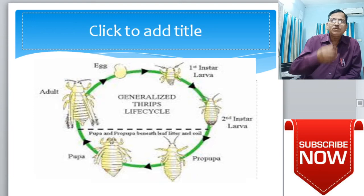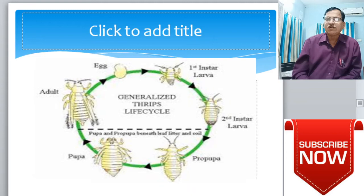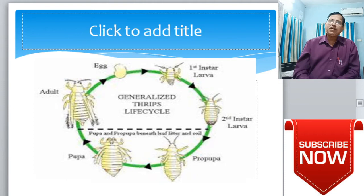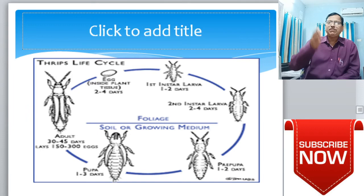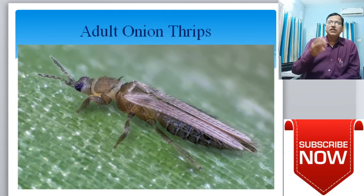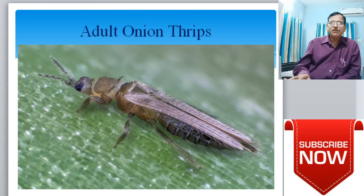The schematic life cycle diagram shows: eggs hatch into first instar larvae, first instar larvae develop into second instar larvae, second instar larvae become pro-pupae, pro-pupae are converted into pupae, and pupae develop into adults. Mature female adults lay eggs, and this cycle continues. This is also the thrips life cycle schematic representation.